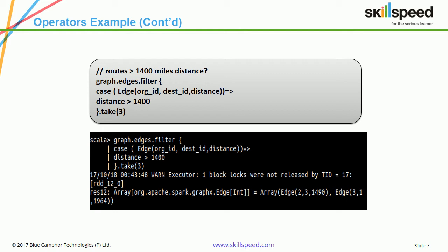The filter condition is applied to the property of the edge. The edge has a source vertex, destination vertex, and the distance. So I'm selecting all data where the distance is greater than 1400. As you can see in the screenshot, it clearly shows two results: there is a route from airport 2 to 3, and from 3 to 1.